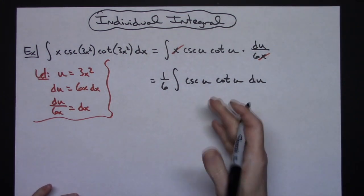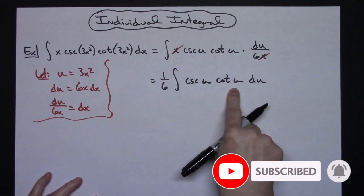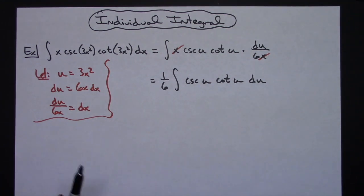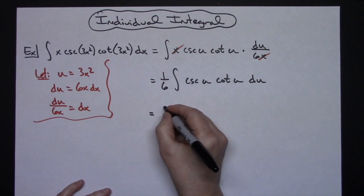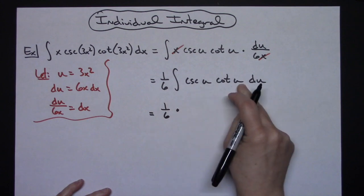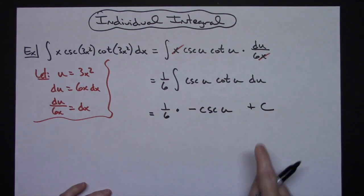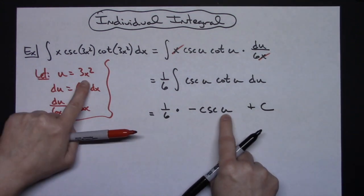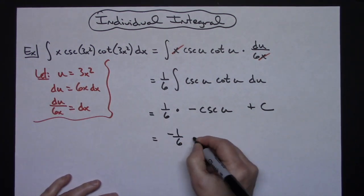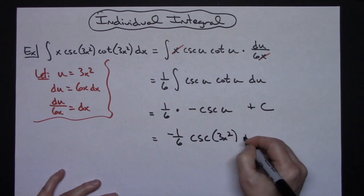At this point the only way you'll be able to finish this is if you have this integral memorized. The integral of cosecant u cotangent u is negative cosecant u — one of those trig integrals you have to have memorized. So we'll have 1/6 times negative cosecant u plus c. Replacing u back, pulling the negative out in front, gives negative 1/6 cosecant of 3x squared plus c.